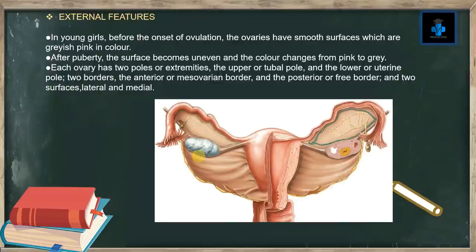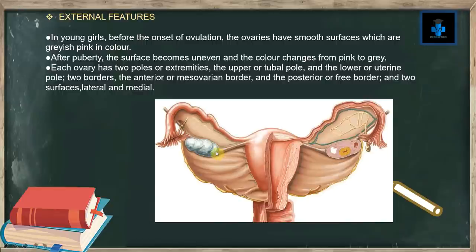External features: in young girls before the onset of ovulation, the ovaries have a smooth surface which is grayish pink in color. After puberty the surface becomes uneven and the color changes from pink to gray. Each ovary has two poles or extremities: the upper pole or tubal pole and the lower pole or uterine pole.